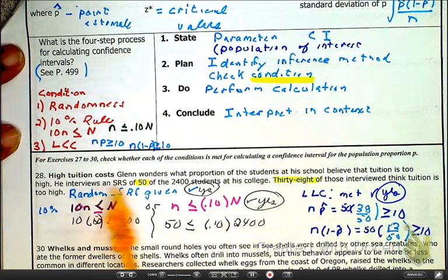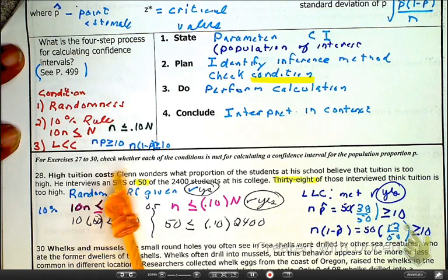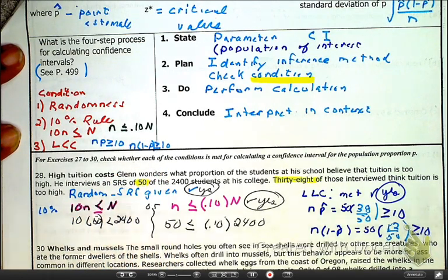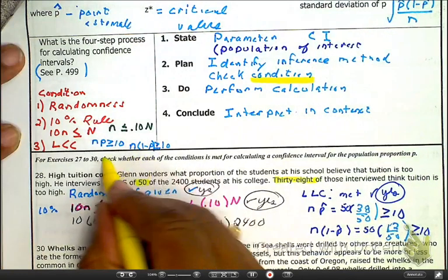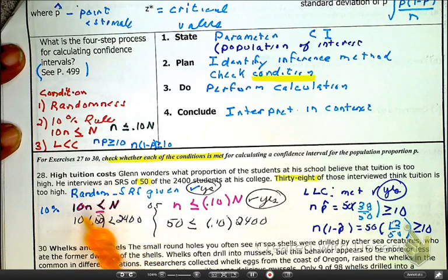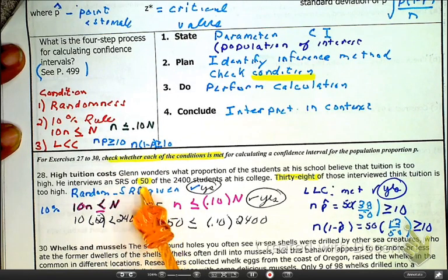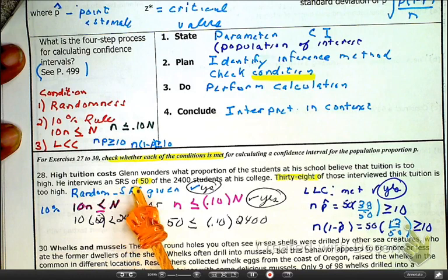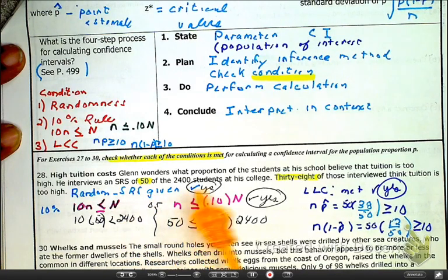As we move on, for problem number 28, it's just asking us to make sure that the conditions and assumptions have been met. So check whether they've been met. Here, number 28, you notice that they said to you that it's an SRS of 50, so that's given, so yes, we're okay so far.